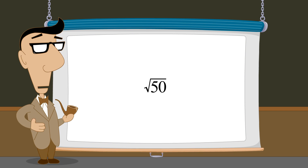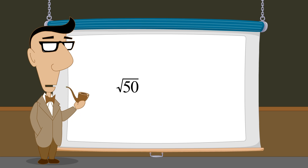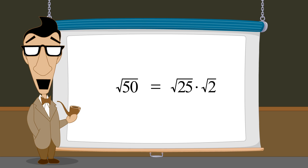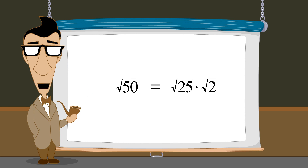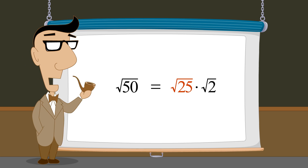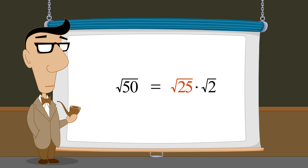So when we factor any quantity under a square root sign, we can take the square root of each factor separately. Then, any factors which are perfect squares can be written as the root itself, eliminating the radical sign.